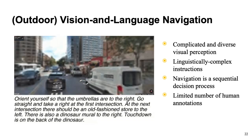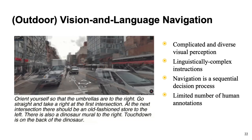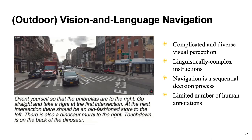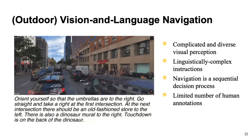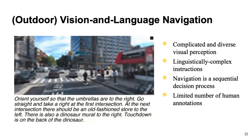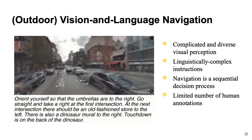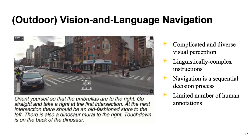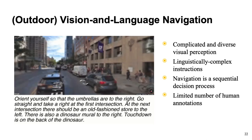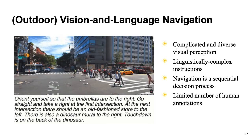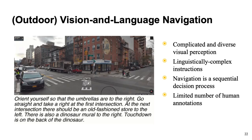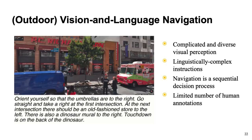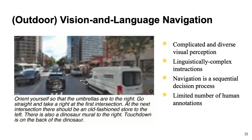Vision-and-language navigation is a much more challenging task. It has complicated and diverse visual perception, linguistically complex instructions, and navigation itself is a sequential decision process with a huge search space. Because it's really hard to collect data in interactive settings, there are a limited number of human annotations compared to the millions of images and texts on the web. Human data for vision-and-language navigation is really hard to find.